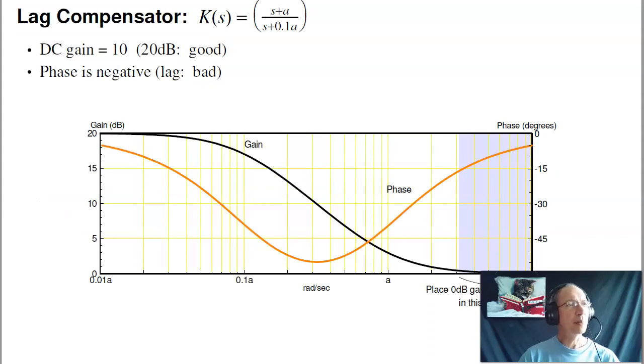What a lag compensator looks like is this: you have a pole and a zero. In this case, the pole is smaller than the zero. What that does is make the DC gain 10 times bigger than the high frequency gain. That's good. I want to increase the DC gain, increasing the error constant.